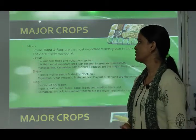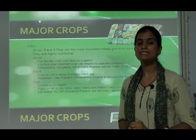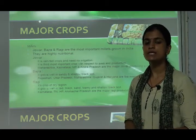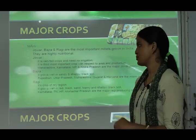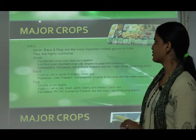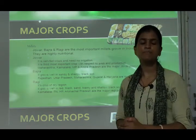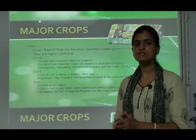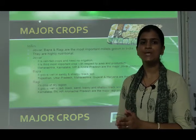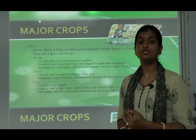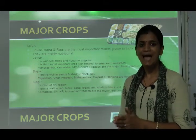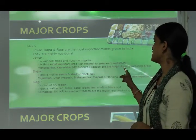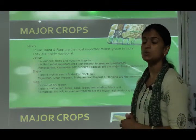Jowar is a rain-fed crop and needs no irrigation. Rain-fed crop means it has the requirement of rainfall and no irrigation system is used. It is the third most important crop with respect to area and production — the first was rice, second was wheat, and jowar is third. Maharashtra, Karnataka, Madhya Pradesh, and Andhra Pradesh are the major jowar-producing areas.